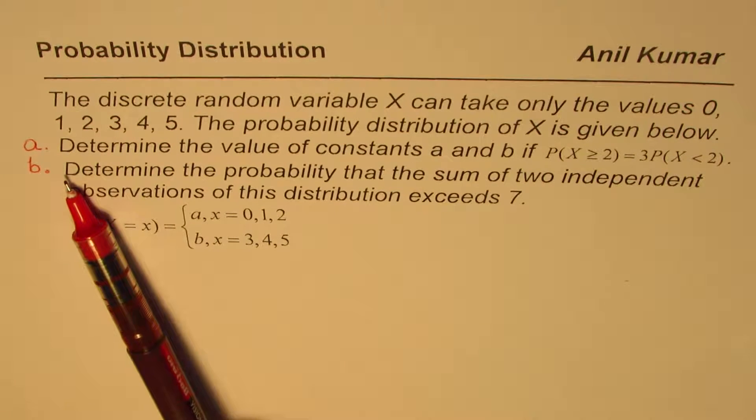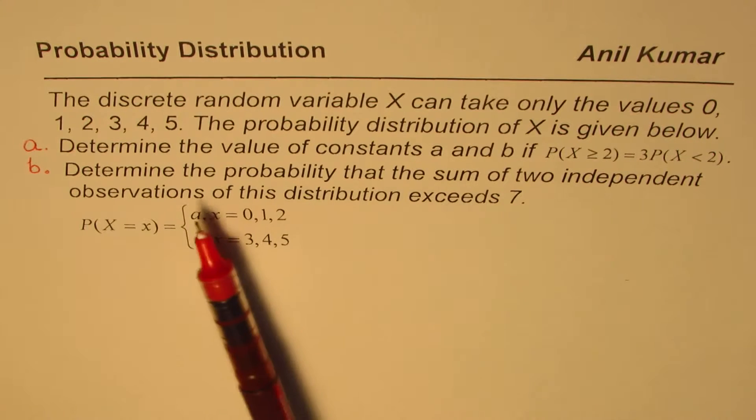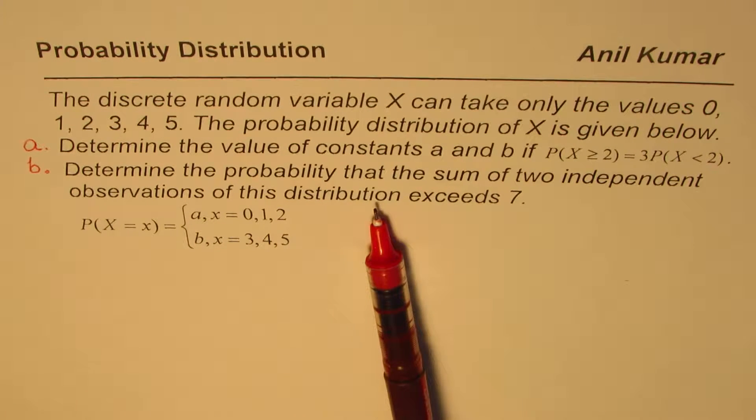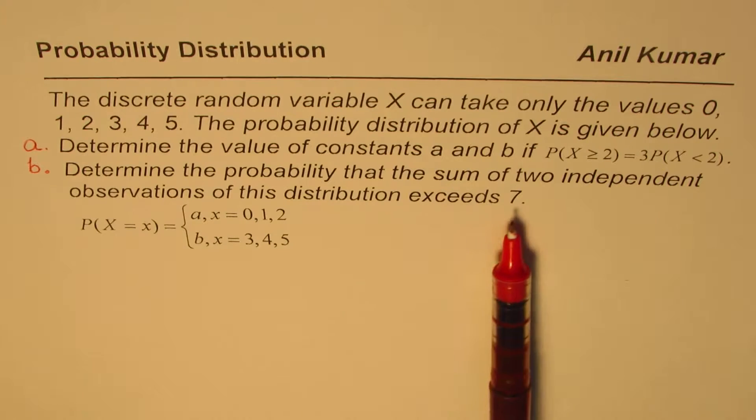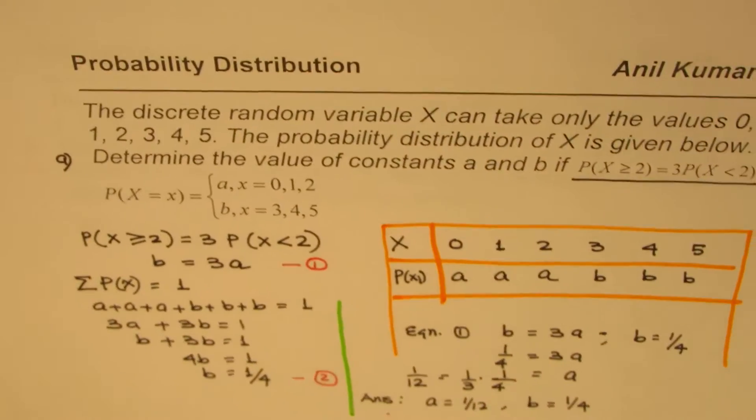Part B is, determine the probability that the sum of two independent observations of this distribution exceeds 7. Now, we did part A in one of our videos. Here is the solution which I am sharing with you.